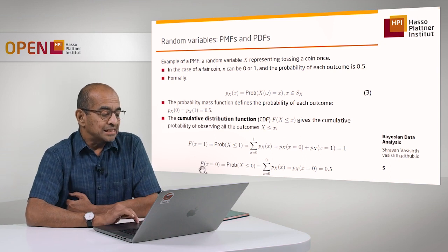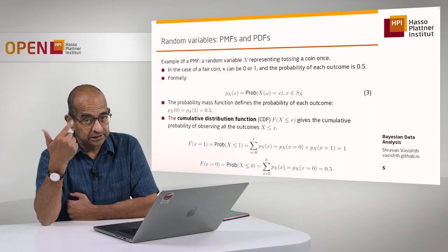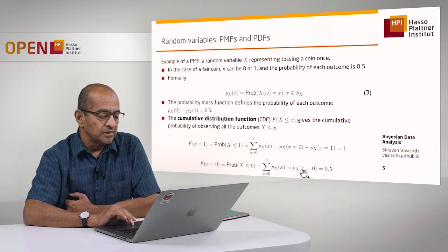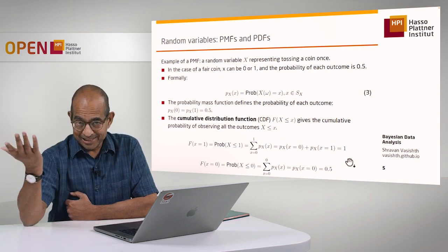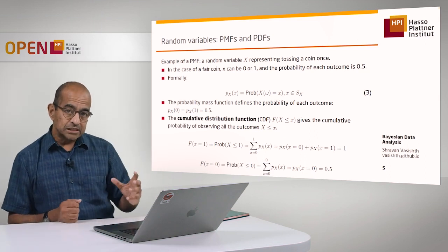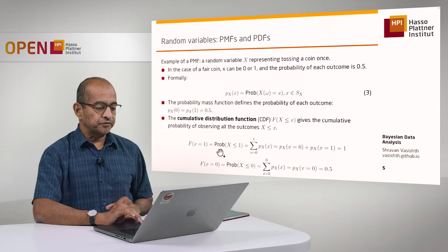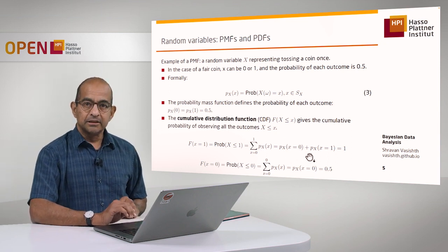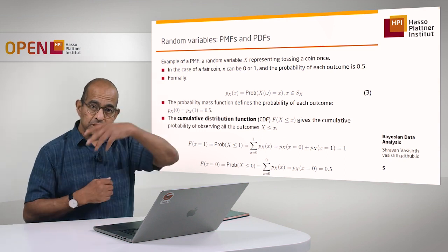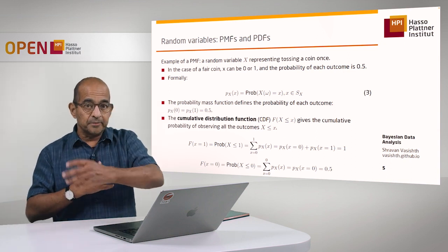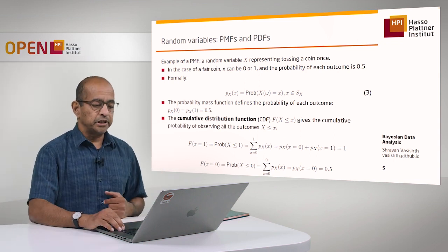I could do another example: what's the cumulative probability of observing a value like 0 or something less than that? There's nothing less than 0 in this example — the support of X contains only 0 and 1. So I'm just taking the probability of observing X equal to 0, and that's my cumulative probability. The CDF F of X is actually built from the probability mass function. So that's the big structure: a random variable maps events to real numbers, probabilities are described through the PMF, and you build the CDF from the PMF.